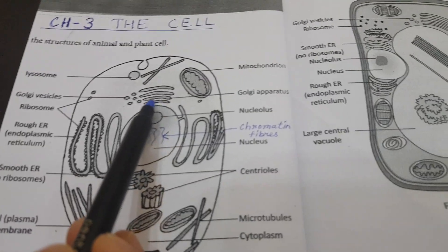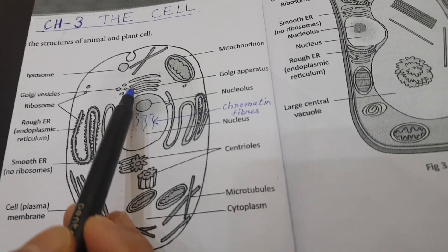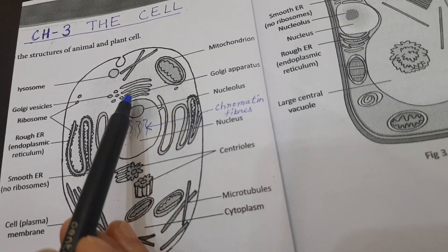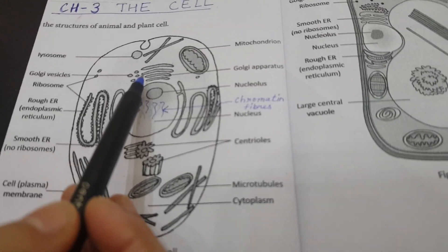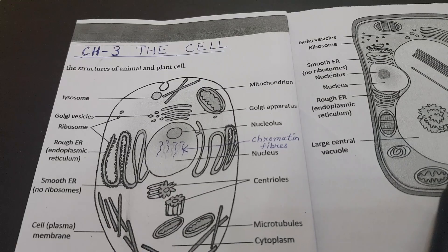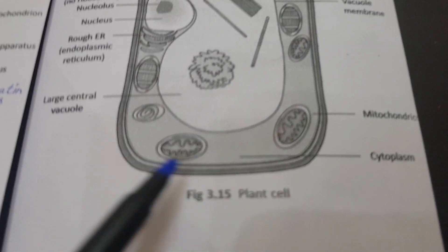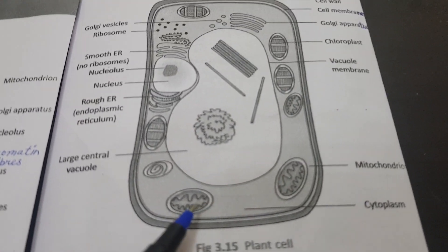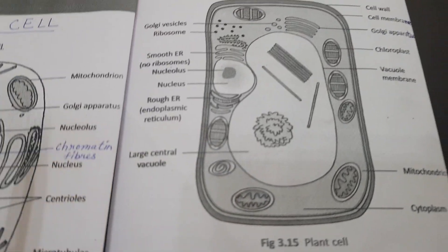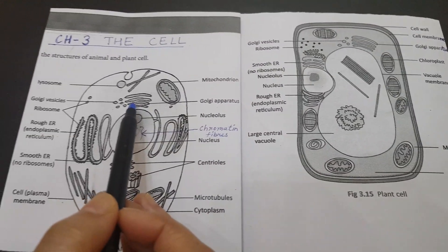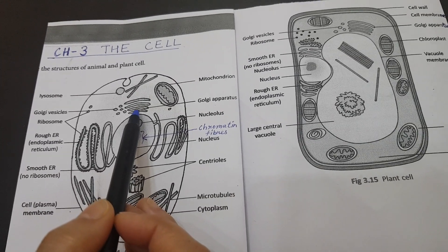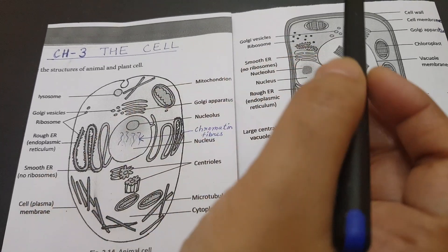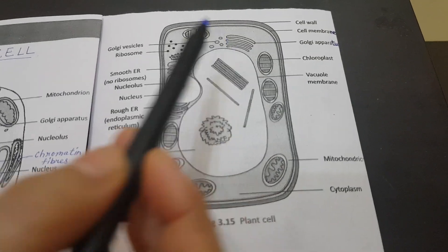This organelle is called Golgi bodies or Golgi apparatus. Mitochondria are also present in the plant cell. Similarly, Golgi bodies are present in animal cells and also in plant cells.